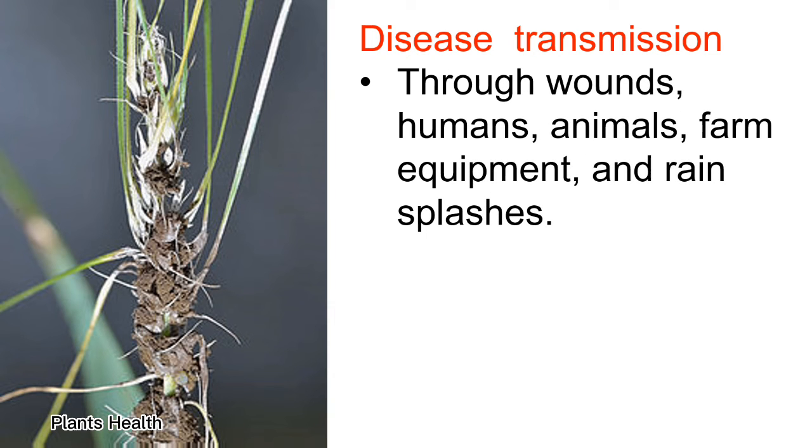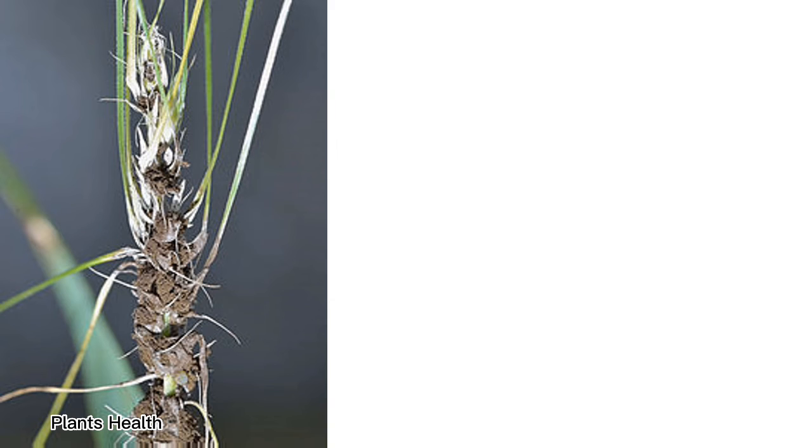Loose smut disease is transmitted through wounds, humans, animals, farm equipment, and rain splashes.